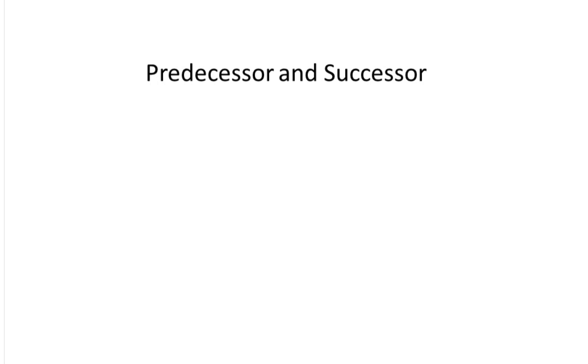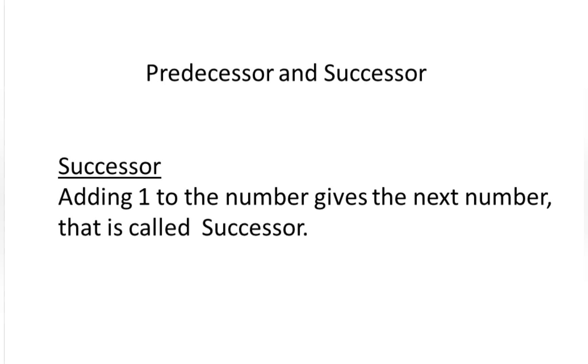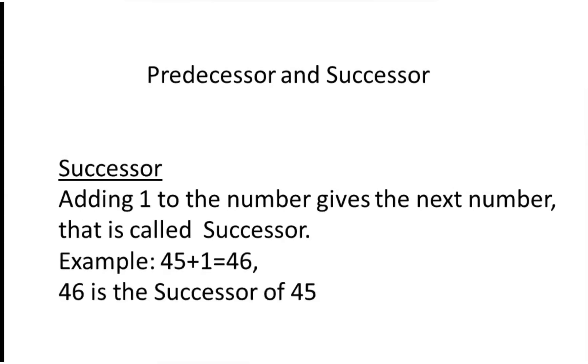Next, let us understand what is predecessor and successor. What is a successor? When we add one to a number, the result is called the successor. Adding one to a number gives the next number, and that is the successor. For example, 45 plus 1 equals 46, so 46 is the successor of 45.